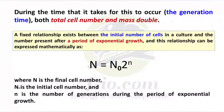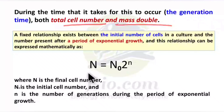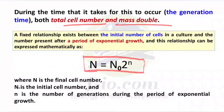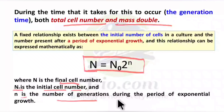The most important part is the mathematical expression of growth, because questions are directly framed from these formulas. During the generation time, when a bacteria divides into two new bacteria, the total cell number increases and the mass doubles. There is a fixed relationship between the initial number of cells and the period of exponential growth. This is: N = N₀ × 2ⁿ, where N is the final cell number, N₀ is the initial cell number, and n is the number of generations during exponential growth.